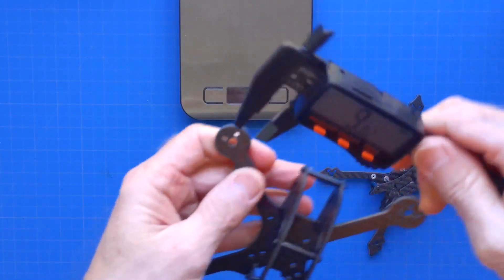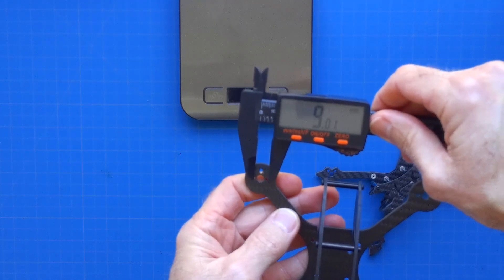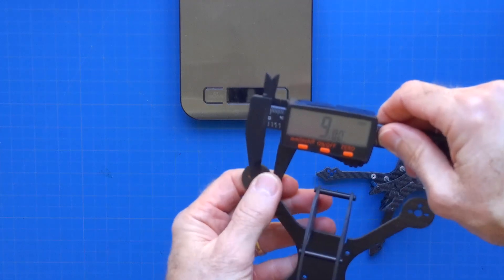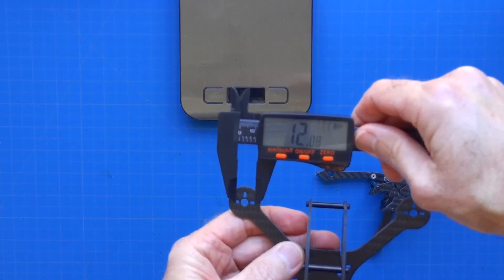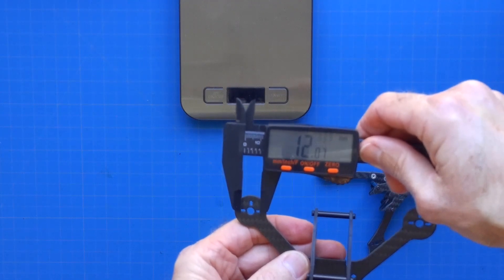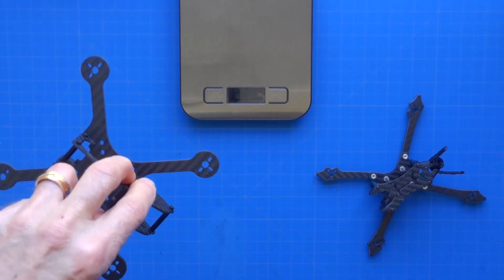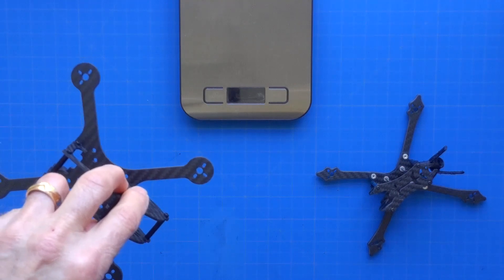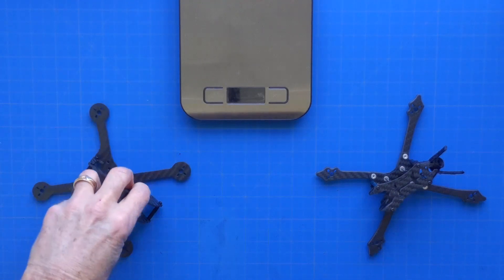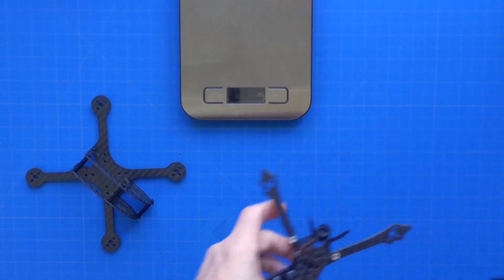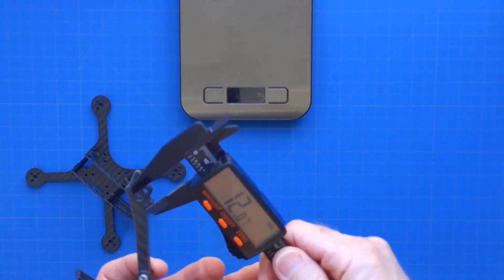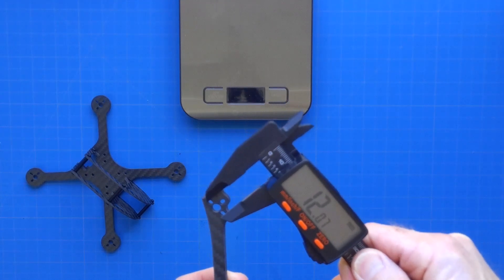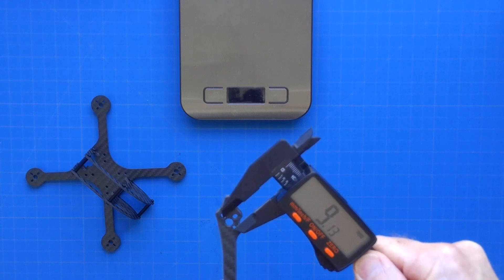Which makes both of these frames versatile with regards to the types of motors that they can hold. As you can see, this is a 9x9 millimeter mounting pattern minimum and it can go up to a 12x12 millimeter mounting pattern, which means that this frame theoretically can run 11xx to 15xx motors or any motor with a 12x12 mount. Similarly, the same is true for the HDLRC Aero 3 Hybrid.